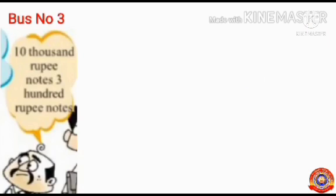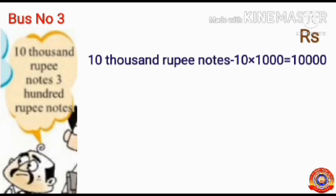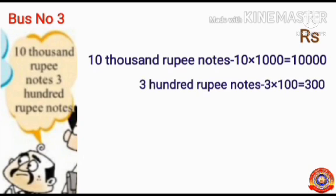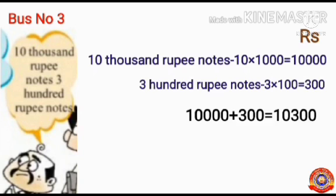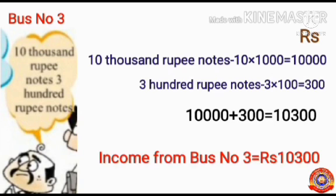Next, let's find out the income from bus number 3. Bus number 3 got 10 one-thousand rupee notes and 3 hundred rupee notes. For 10 one-thousand rupee notes: 10 × 1,000 = 10,000. For 3 hundred rupee notes: 3 × 100 = 300. Then, add these amounts: 10,000 + 300 = 10,300. So the income from bus number 3 equals ₹10,300.